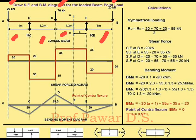We are going to start the calculation part. This is a symmetrical load. The distances are 1 meter, 1.3, 1.3, and 1.3 — so there is symmetry in this beam.